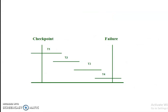Dear Learners, you can see on the screen there is a diagram showing checkpoints. In the diagram you can see the transactions T1, T2, T3, and T4. When a system with concurrent transactions crashes and recovers, it behaves in the following manner: when the system is executing a concurrent transaction and it crashes, certain steps determine how the data is recovered.